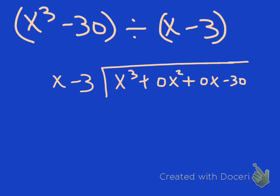So we ask ourselves, x times what gives me x cubed? x squared. And I put it over the top of the x squared term. And so I'm going to multiply this out and I go, that's going to be x to the third. x squared, and that's going to be negative 3x squared. Notice now they line up right here. They're lining up.